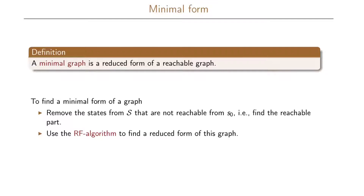The minimal graph is defined as being the reduced form of a reachable graph. To find the minimal form of a graph, we first remove all the states from our set of states that are not reachable from s0 — that is, we find the reachable part of the graph. Then we use the RF algorithm to find a reduced form of this reachable graph, and that gives us our minimal graph.